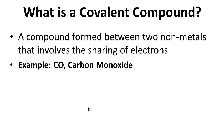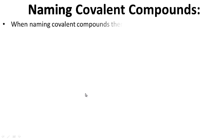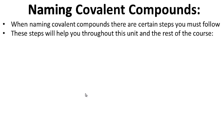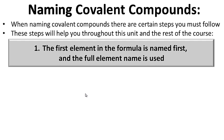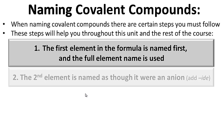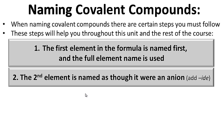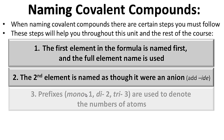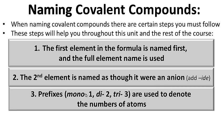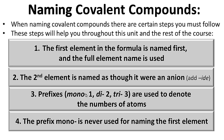For your notes: what is a covalent compound? When naming covalent compounds, there are certain steps you must follow. Step one: the first element in the formula is named first, and the full element name is used. The second element is named as though it were an anion — we add -ide to the end of it. Prefixes — mono for one, di for two, tri for three — are used to denote the number of atoms. The prefix mono is never used for naming the first element.